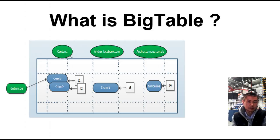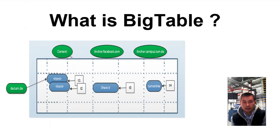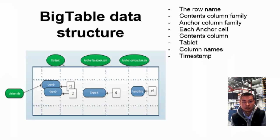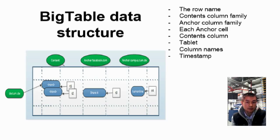As you can see in its data structure, the set of possible column families for a table is fixed when it is created, whereas columns like labels within the column family can be created dynamically at any time. Column families are stored close together in the distributed file system, and each Bigtable cell, like a row-column pair, can contain multiple versions of the data that are usually stored in decreasing timestamp order.